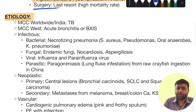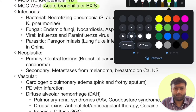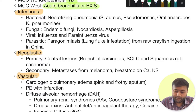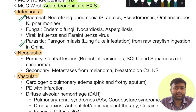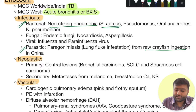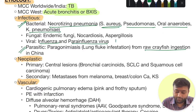The second section is the etiology behind hemoptysis. The most common cause worldwide and in India is tuberculosis, whereas the most common cause in the west is acute bronchitis or bronchiectasis. Think of three major conditions: infectious, neoplastic, and vascular. In infectious etiologies, you can have bacterial, viral, fungal, or parasitic causes. Parasitic causes include paragonimiasis — lung fluke infestation — generally seen in Southeast Asia and China, occurring due to raw crayfish ingestion. In bacterial causes, necrotizing pneumonia encroaches on pulmonary vessels, rupturing them and causing hemoptysis — think Staphylococcus aureus, Pseudomonas, oral anaerobes, and Klebsiella pneumoniae. Fungal infections like endemic fungi, nocardiosis, and aspergillosis are next, and viral causes include influenza and parainfluenza virus, which remain the most common causes in the west.